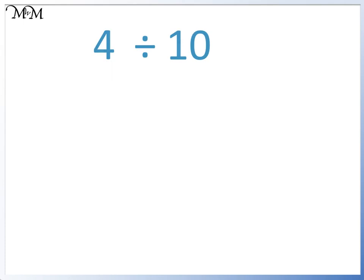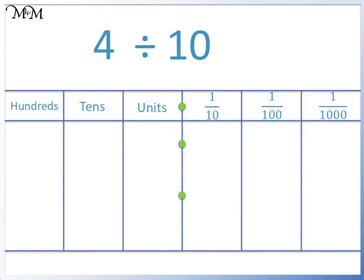Here's another example: 4 divided by 10. We can start by placing 4 in the place value grid. When we divide by 10, we move the digits one place to the right. So we move 4 from the units column to the tenths column. Because we don't have anything before the decimal point, we need to write in a zero to show it. The number we have now is 0.4. So 4 divided by 10 equals 0.4.